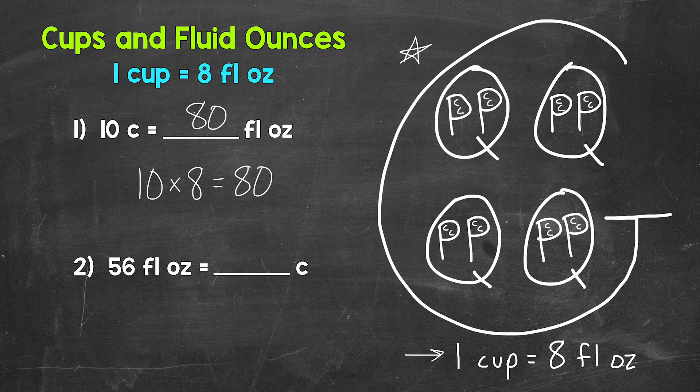Let's move on to number two. We have 56 fluid ounces equals how many cups? Well, each group of 8 fluid ounces equals a cup. So how many groups of 8 fluid ounces are in 56 fluid ounces? We need to divide here.